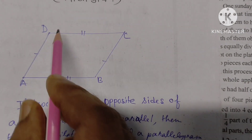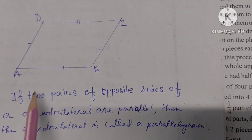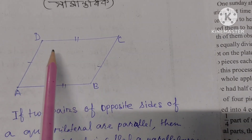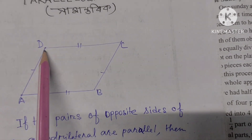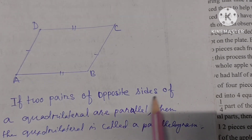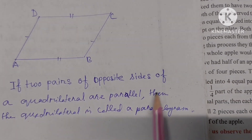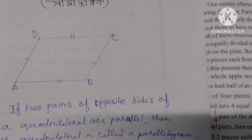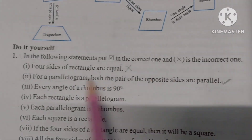If the qualifying pairs of sides are parallel, then the shape is called a parallelogram. This is indeed a characteristic of a parallelogram — two pairs of opposite sides are parallel. So this statement is correct.